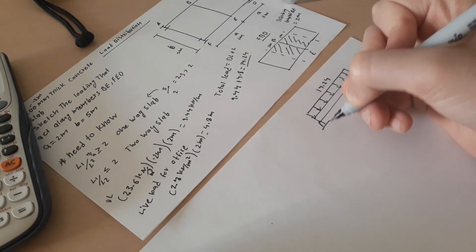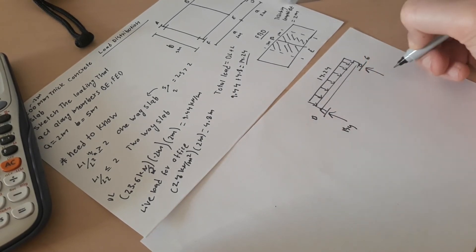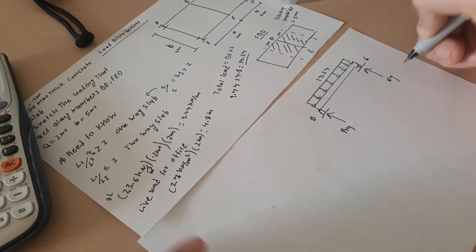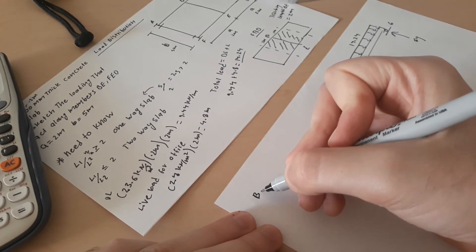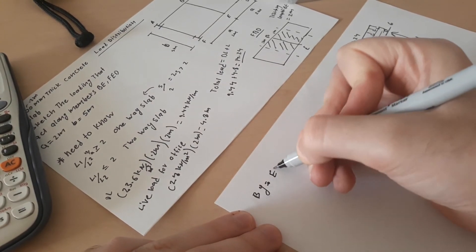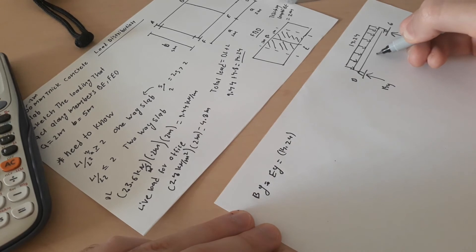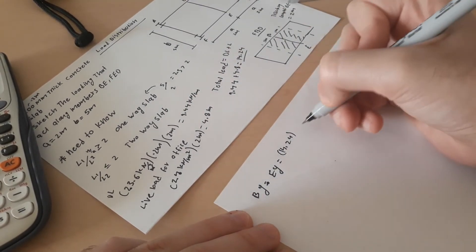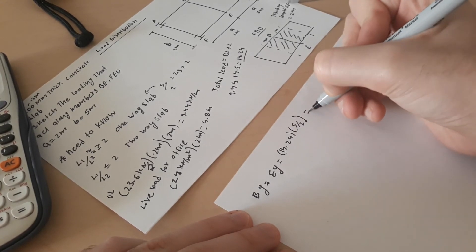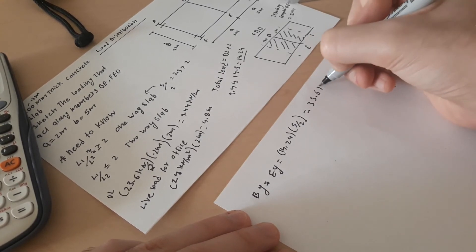This is B and this is E. We need to find the reaction which is By and Ey. Reactions are very easy since this is symmetrical loading. We do By equals to Ey equals to 14.24 times 5 over 2, gives us 35.6 kilonewton.